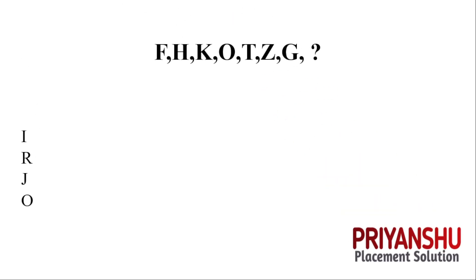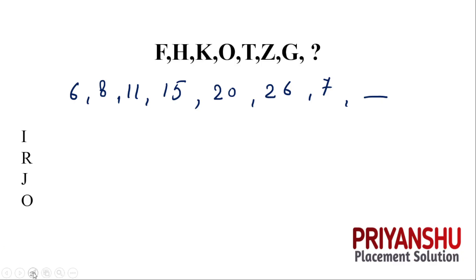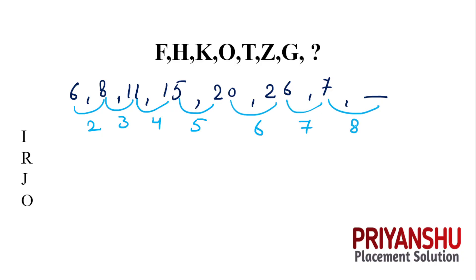The next question: F H K O T Z G — let us find the differences. F is 6, H is 8, K is 11, O is 15, T is 20, Z is 26, G is 7. The differences are 2, 3, 4, 5, 6, then 7, and the next difference is 8. So 7 plus 8 = 15, which is O. The correct answer is O.